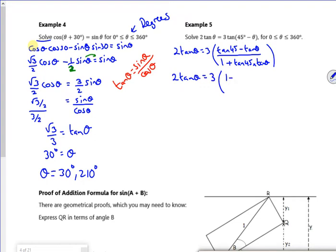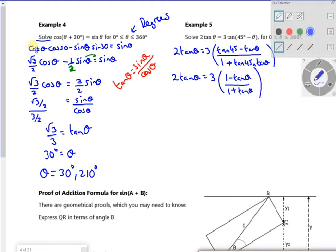It's 3 lots of 1 minus tan theta over 1 plus tan theta. Now if I multiply through by the 1 plus tan theta, so if I multiply through by that, take that up there.